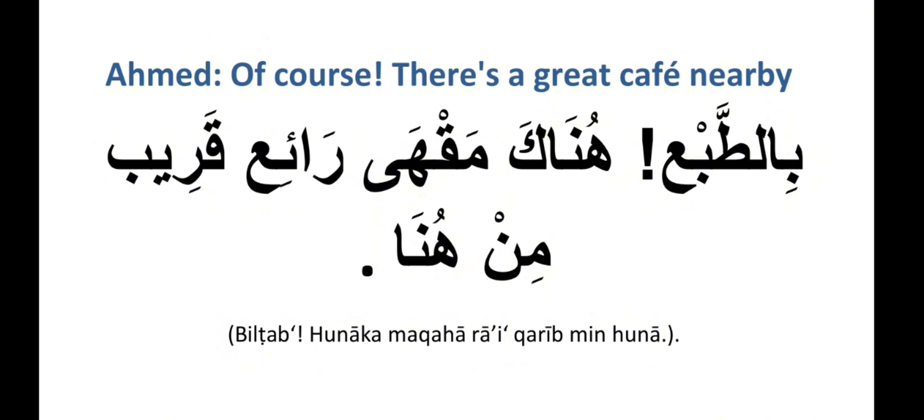Ahmed replies: 'Of course, there is a great cafe nearby.' — 'Bittab'i, hunaka maqha ra'i' qarib min huna.' 'Bittab'i' means of course. You can also say 'bittabi'at al-hal' — another expression meaning of course — or simply 'tab'an.' 'Hunaka maqha ra'i'' — there is a great cafe. 'Qarib min huna' — nearby. Repeat: 'Bittab'i, hunaka maqha ra'i', qarib min huna.'